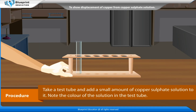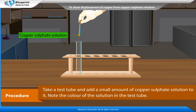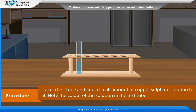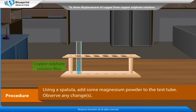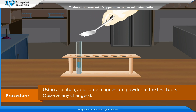Procedure: Take a test tube and add a small amount of copper sulphate solution to it. Note the colour of the solution in the test tube. Using a spatula, add some magnesium powder to the test tube. Observe any changes.